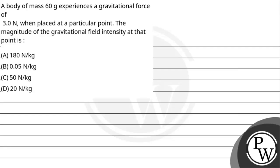Hello, let's get to the question. The question says: a body of mass 60 grams experiences a gravitational force of 3.0 N when placed at a particular point. The magnitude of the gravitational field intensity at that point is... So now we have to answer this.